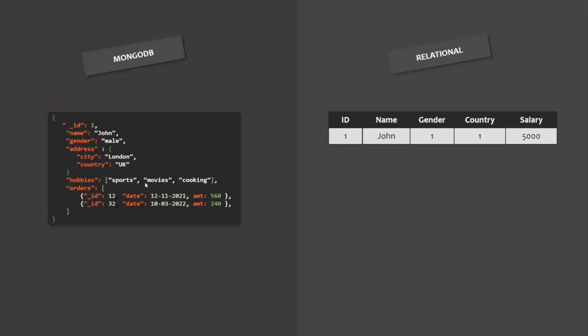Just like JSON, BSON data also has fields and data is stored as key-value pairs. Each field of a document corresponds to a column of a table row in a relational database. In a document, a field can also store a list — that is, it can store an array. But in a relational database, a column cannot store multiple values and you need to find a workaround. That is not the case in MongoDB — this is the flexibility that MongoDB provides.